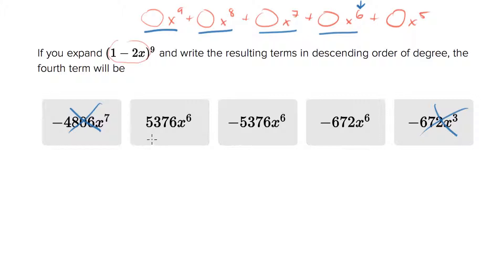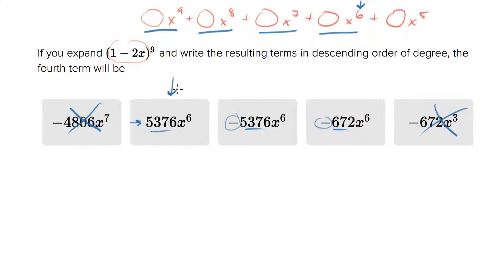Looking at the coefficients in the remaining answer choices, you can see it would be a nightmare to actually expand everything out and isolate the x to the sixth term. So let's use some logic to figure out what qualities that coefficient should have. The first thing I notice is that some of these answer choices are negative and one is positive. I'm hoping I can show the x to the sixth term will be positive — and if it is, we have the answer.